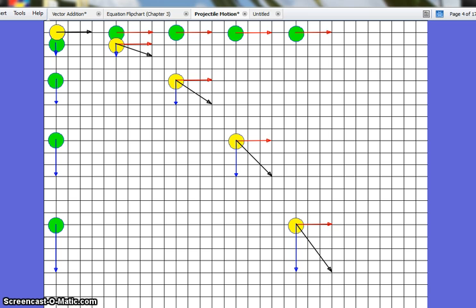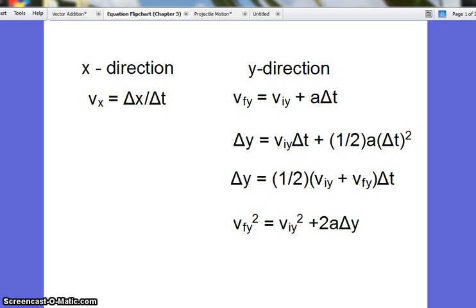However, in the y-direction, it is not going to be the same distance each snapshot or each second. If we look at our equation, the second equation, we see that it is quadratic.